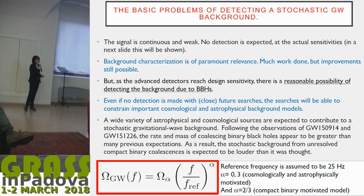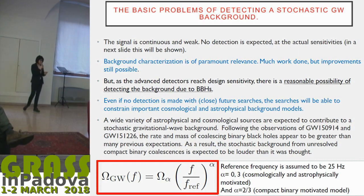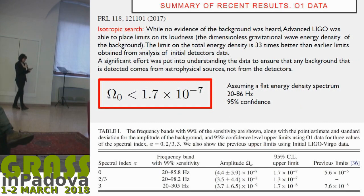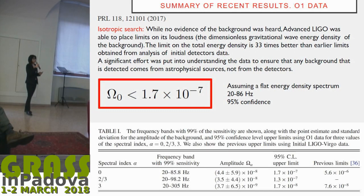In both cases — cosmological and astrophysical — the background can be modeled with a reference frequency and a spectral index alpha, whose value is 0 for a cosmological background, 3 for an astrophysical background, and 2/3 for a compact binary model. The analysis looks for power laws of this form. No evidence of this background was found, and again an upper limit was put. This is the best upper limit in the frequency region from 20 to 86 Hz.